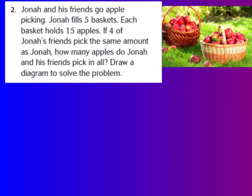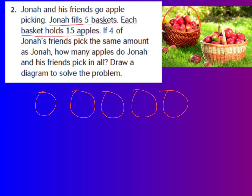Let's look at number 2. It says Jonah and his friends go apple picking. Jonah fills 5 baskets. Each basket holds 15 apples. If 4 of Jonah's friends pick the same amount as Jonah, how many apples do Jonah and his friends pick in all? We're going to draw a diagram to solve the problem. Now, when we solve multi-step problems, they are solved in steps. So the first step is that we have to find out how many apples Jonah picks. So we're going to use a diagram to help us figure that out. It says that Jonah fills 5 baskets. So we're going to draw 5 baskets. 1, 2, 3, 4, 5. And in each basket, there's 15 apples. So we're going to put our 15 apples in each basket.